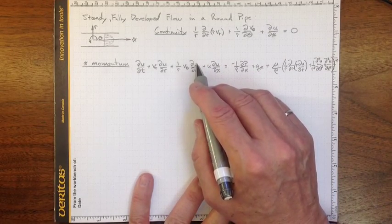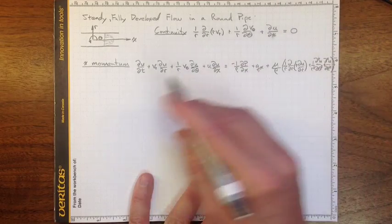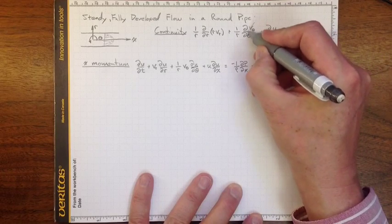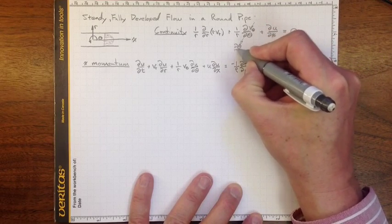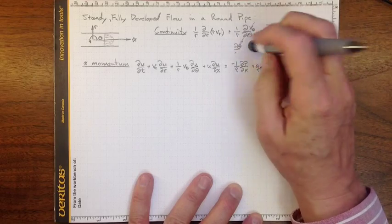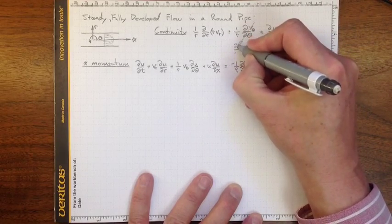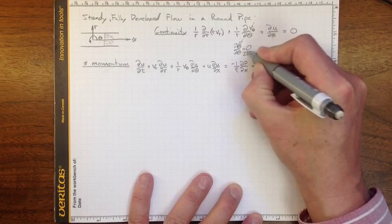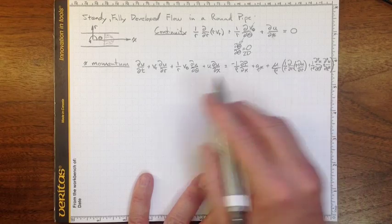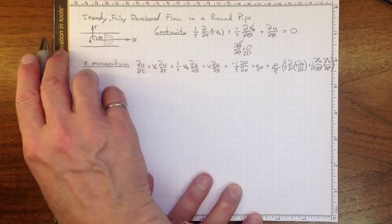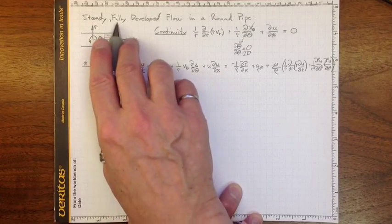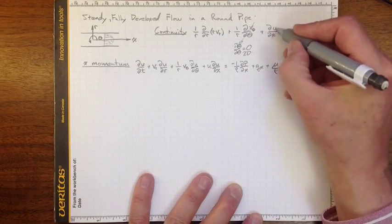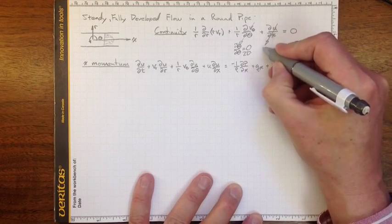If we take that continuity equation and say the flow is two-dimensional — nothing interesting is going on in the theta direction — then d(v_theta)/d(theta) equals zero. And since we've got a long distance upstream, the flow is fully developed and velocity isn't changing in the x direction, so that term also goes to zero.